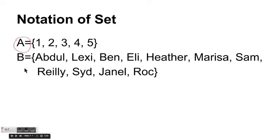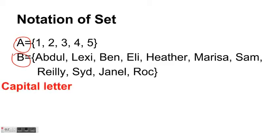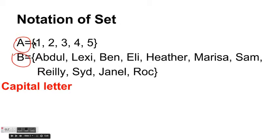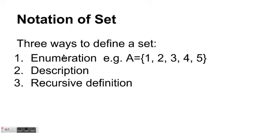There are some notational conventions. First, the name of the set is represented by capital letters. There is an equal sign following the capital letter name, then curly brackets, and all the members are listed inside the curly brackets separated by commas. This method of defining a set is called enumeration.